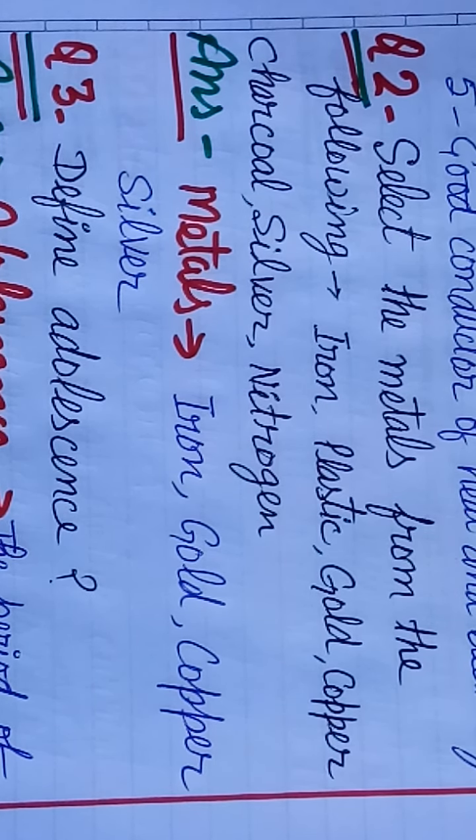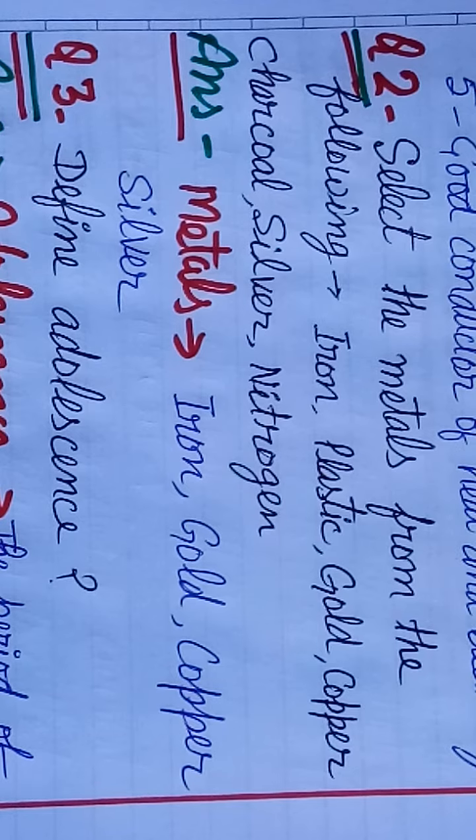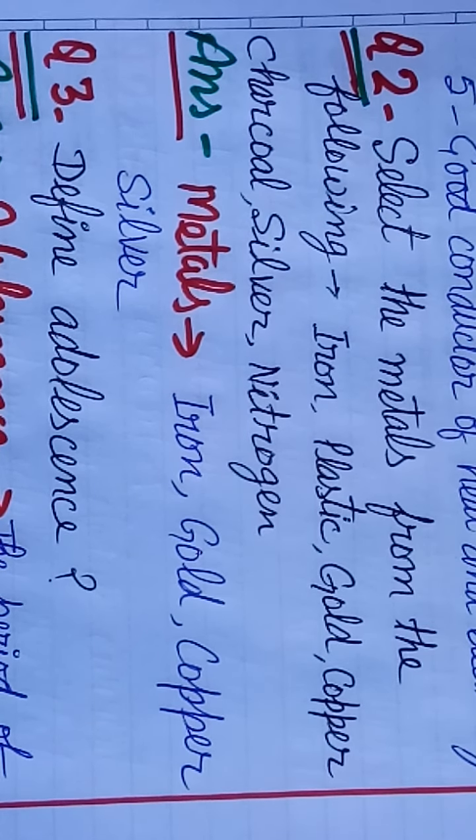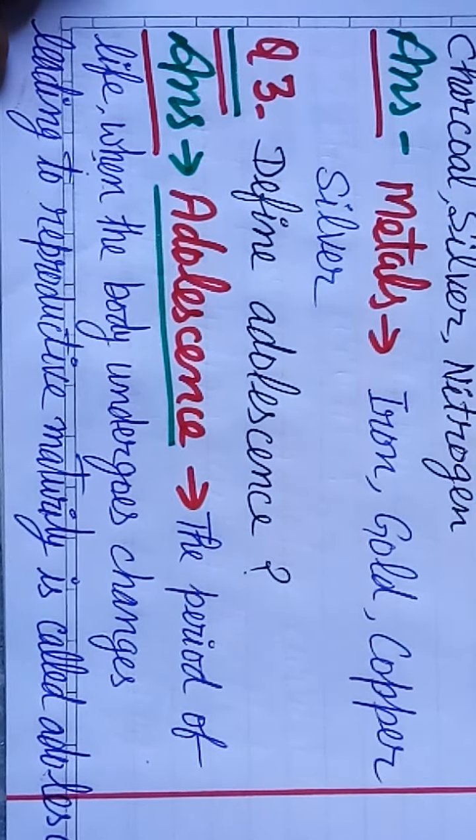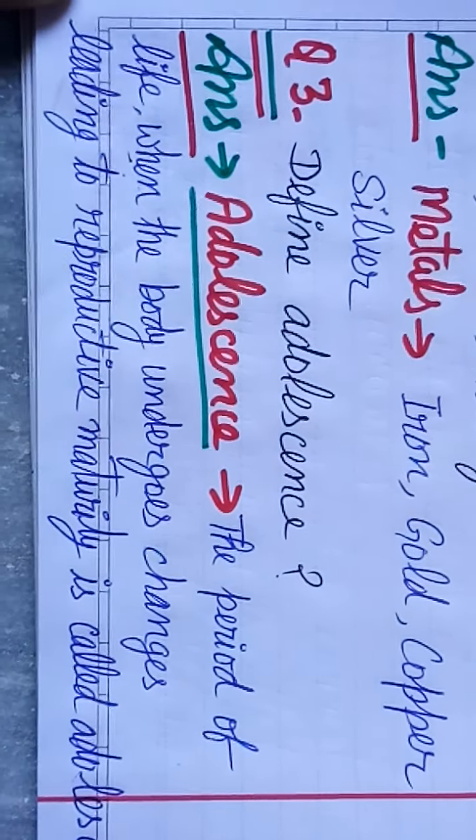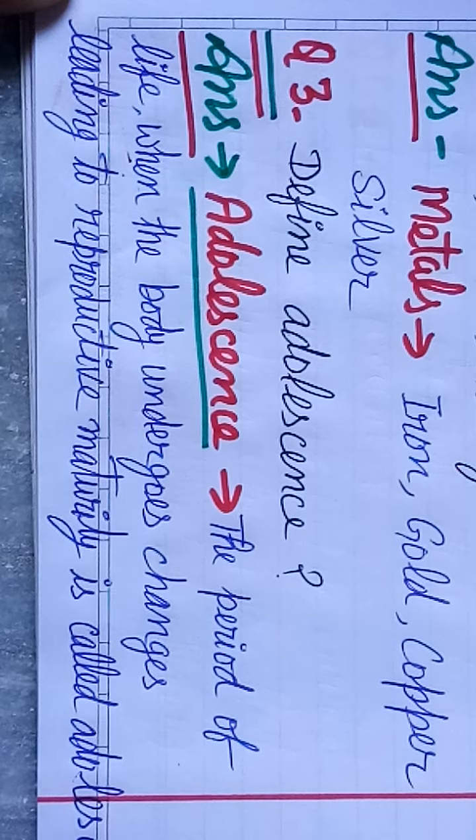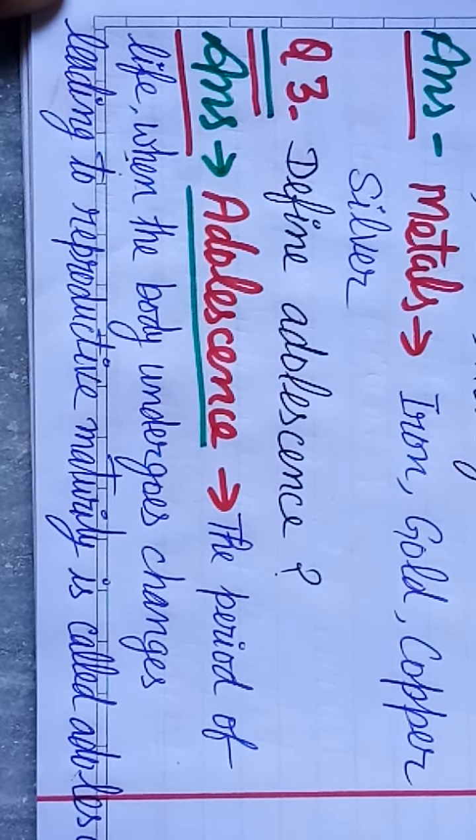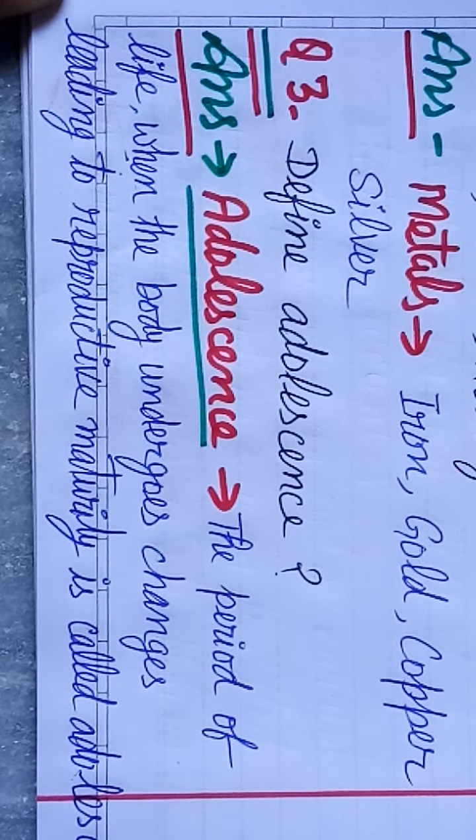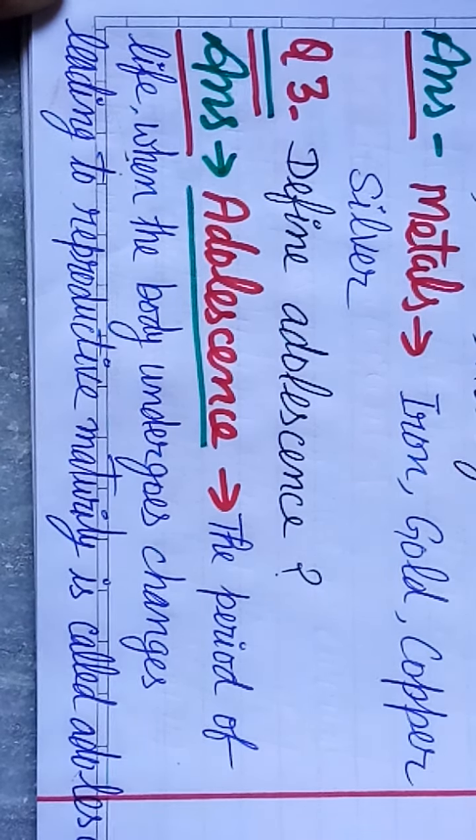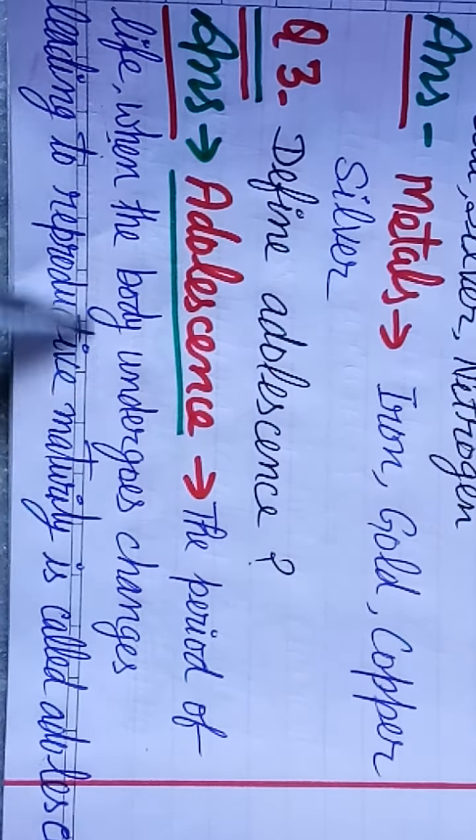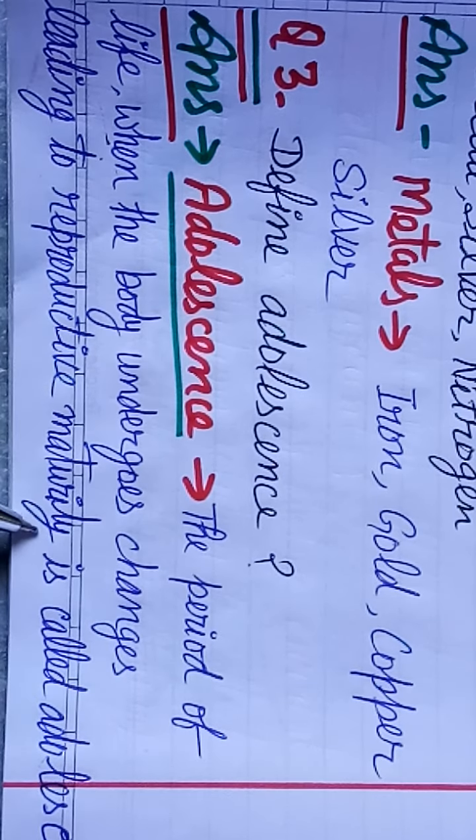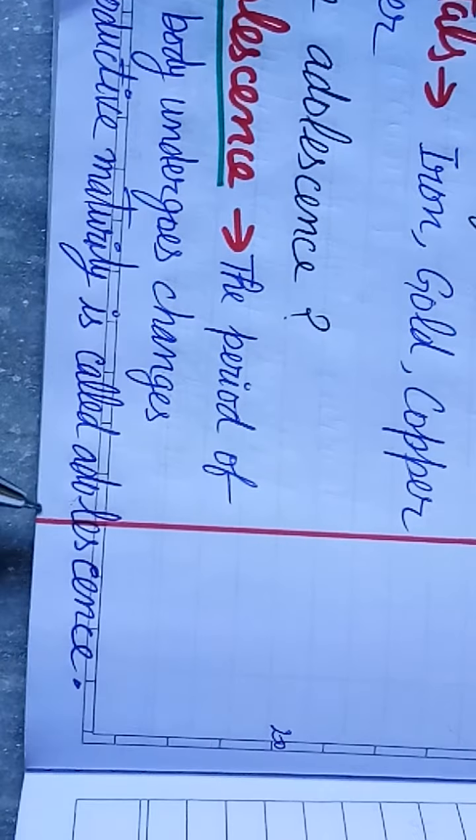And this is plastic, charcoal, nitrogen. The body undergoes changes. The period of life when the body undergoes changes leading to reproductive maturity is called adolescence. Adolescence.